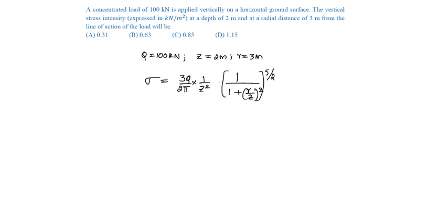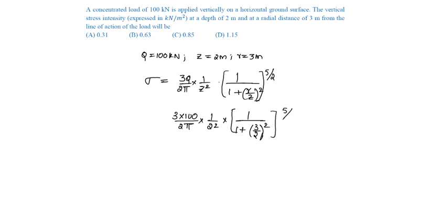Substituting values: 3 into Q (100) by 2π into 1 by Z squared (2 squared) into 1 by (1 plus R/Z, i.e., 3 by 2) whole power 5 by 2, which equals 0.63 kilonewton per meter square. So the answer is Option B.